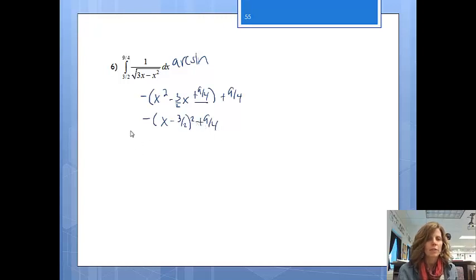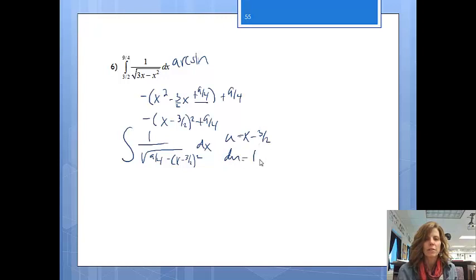And then, from here, if I rewrite this problem, it's going to be 1 over the square root. I like to write my constant first. So, 9 fourths minus (x minus 3 halves) squared dx. And it definitely is an arc sine setup. I just need to, again, identify my parts. U will equal x minus 3 halves. DU, the derivative of x minus 3 halves, is just 1 dx. And I totally have that. And then, my A, the square root of 9 fourths, is 3 halves. So, I have everything that I need.